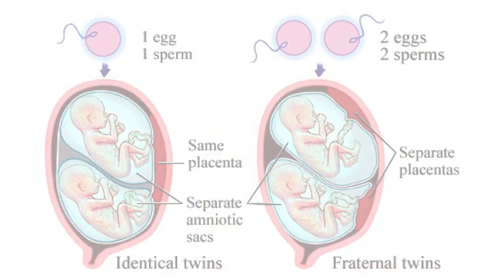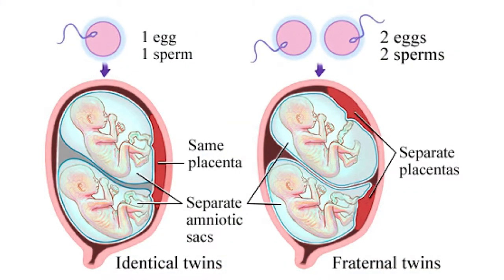In the case of non-identical twins, more than one egg is released during the menstrual cycle and each is fertilized by separate sperm, so more than one embryo may implant and grow in the uterus. These are called dizygotic twins. Triplets and higher multiples are called polyzygotic. These babies have different genes and will not necessarily be of the same gender.